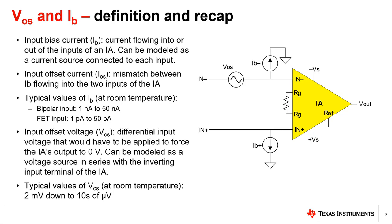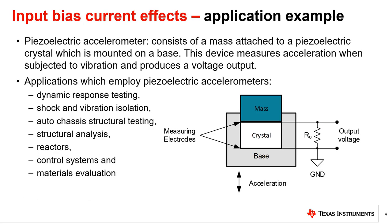Understanding the effects of input bias current on the precision of an application is best done through an example. Let's take a piezoelectric accelerometer example. This accelerometer consists of a mass attached to a piezoelectric crystal, mounted on a base, that measures acceleration when subjected to vibration and produces a voltage proportional to the acceleration. A vibration preamplifier converts the high impedance output of the accelerometer into a low impedance signal suitable for further processing.